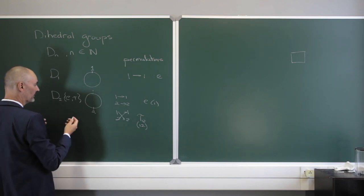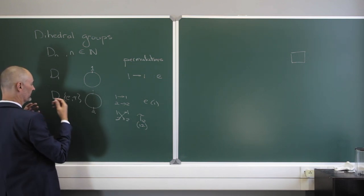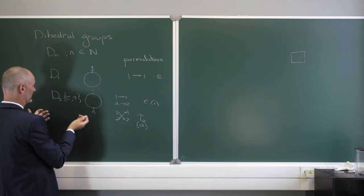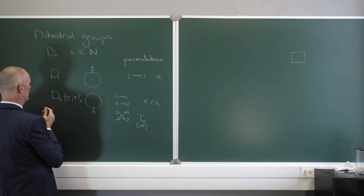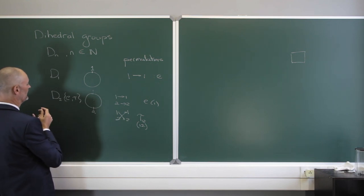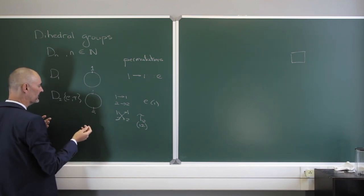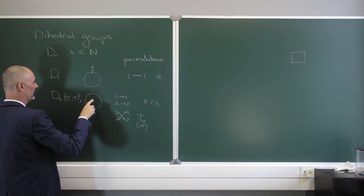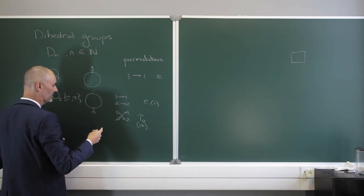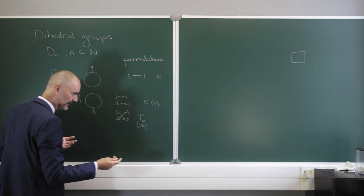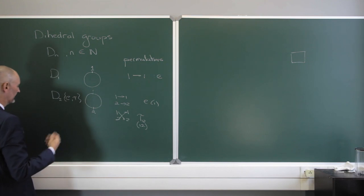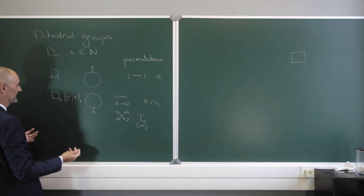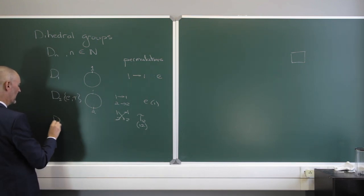And it is a group — you can verify there is closure, there is associativity, there is an identity element, and each one of these is its own inverse. If you compose tau with another tau, it's just going to give you the identity element. The identity element composed with itself gives the identity element.